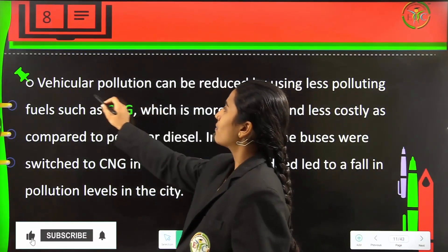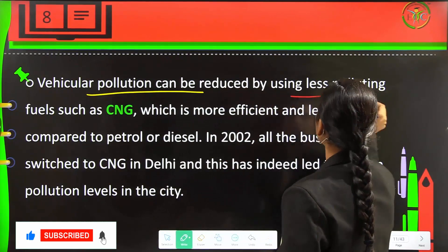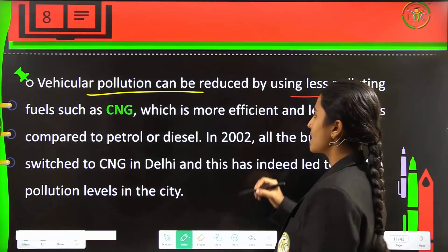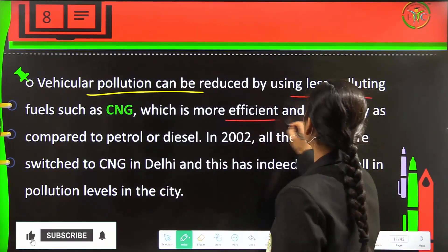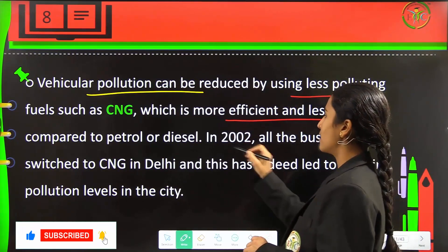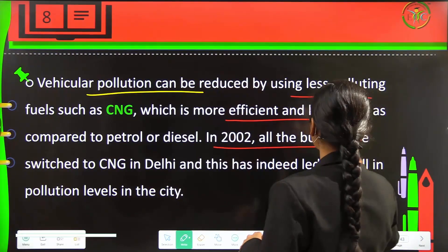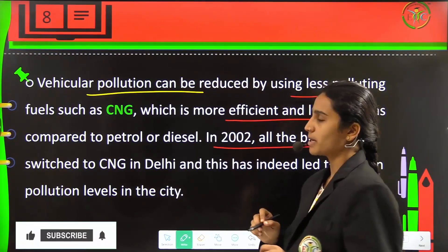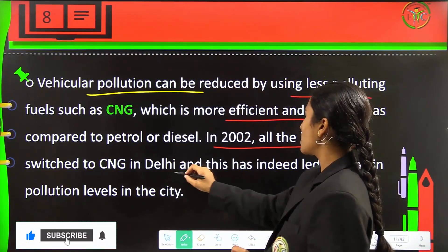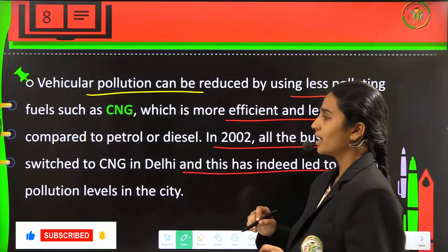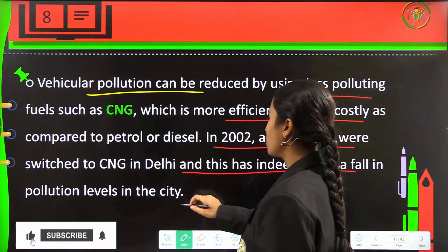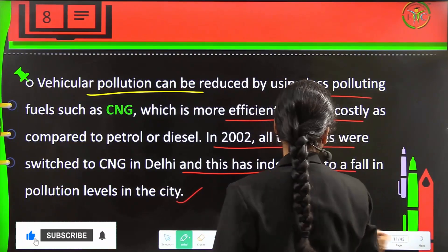Vehicular pollution can be reduced by using less pollutant fuel such as CNG which is more efficient and less costly compared to petrol and diesel. In 2002, all of the buses were switched to CNG in Delhi, and this indeed led to a fall in pollution levels in the city.